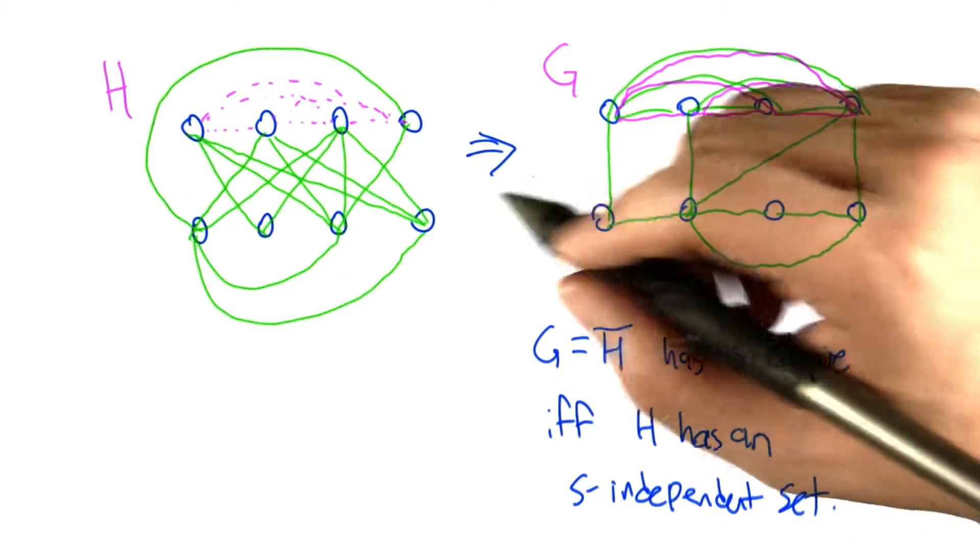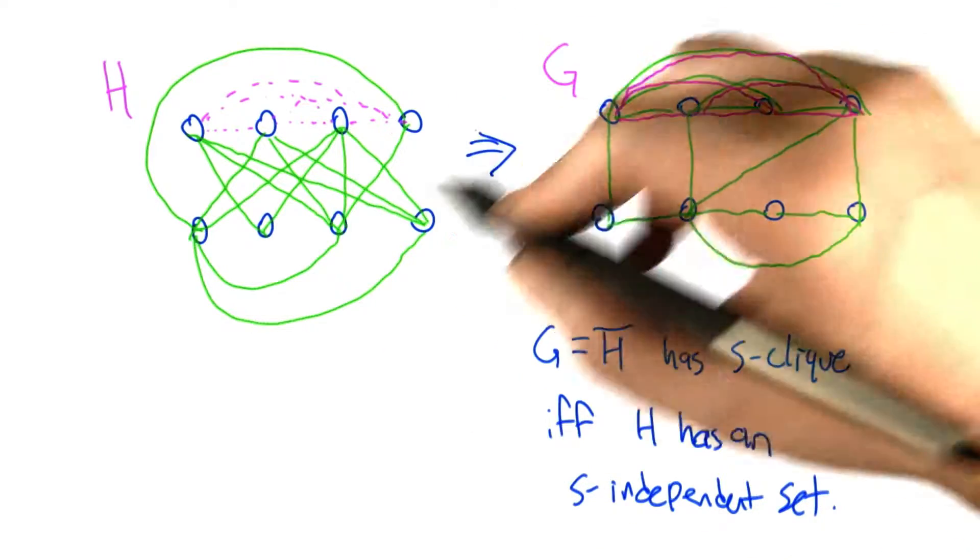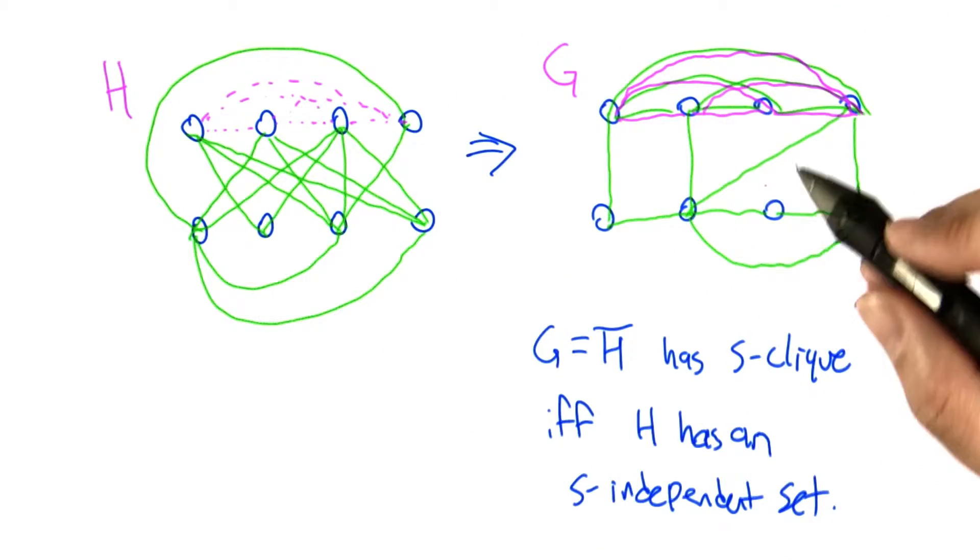Now, in this particular example, it illustrates a general idea, which is we take instances of one problem and we transform them into instances of another. In this case, the transformation is really very straightforward.